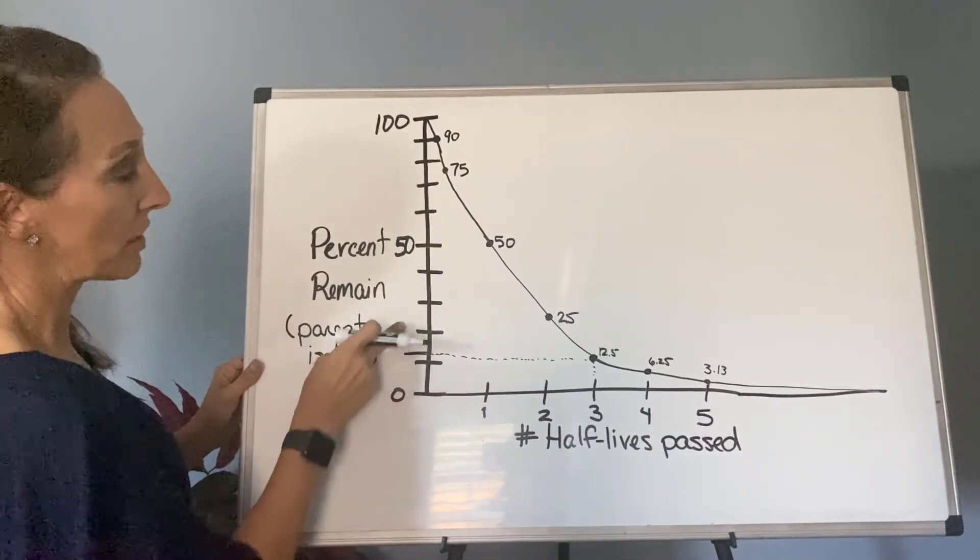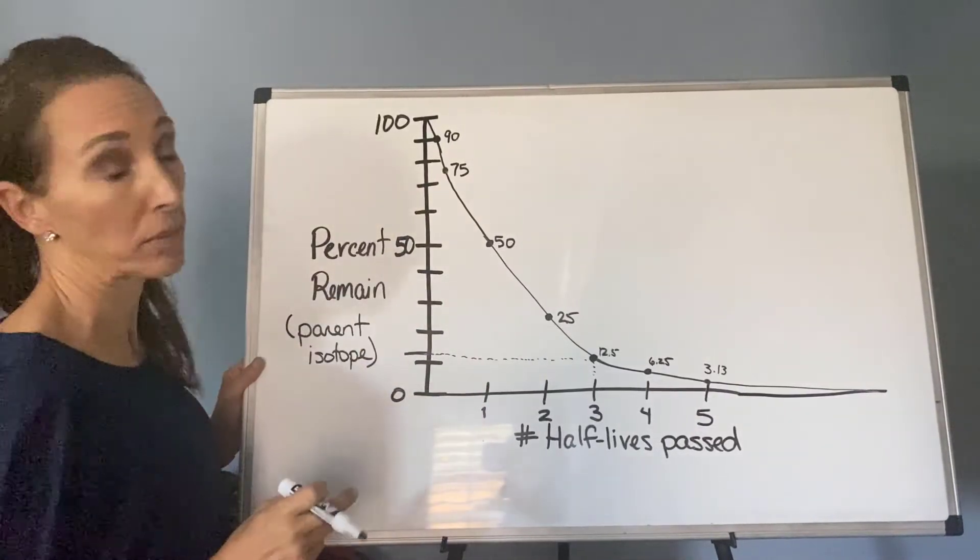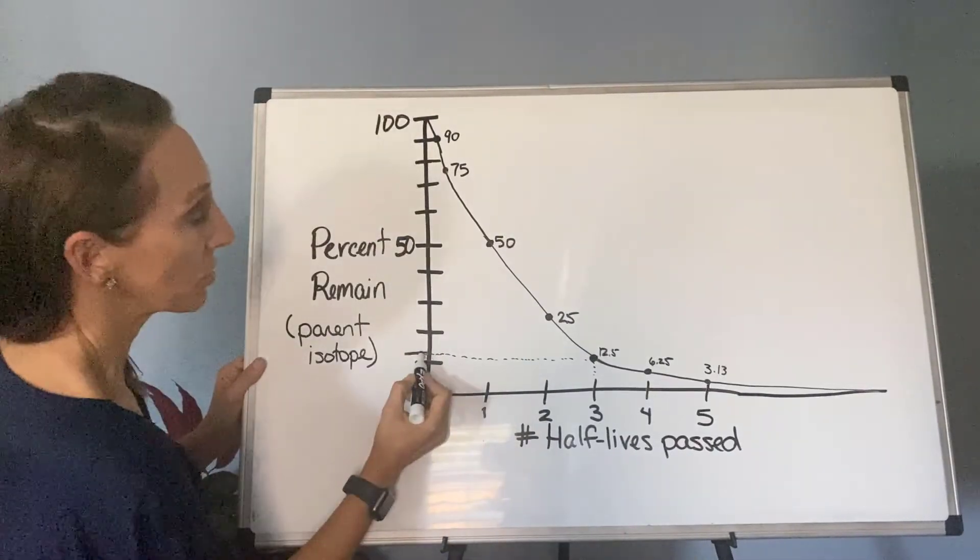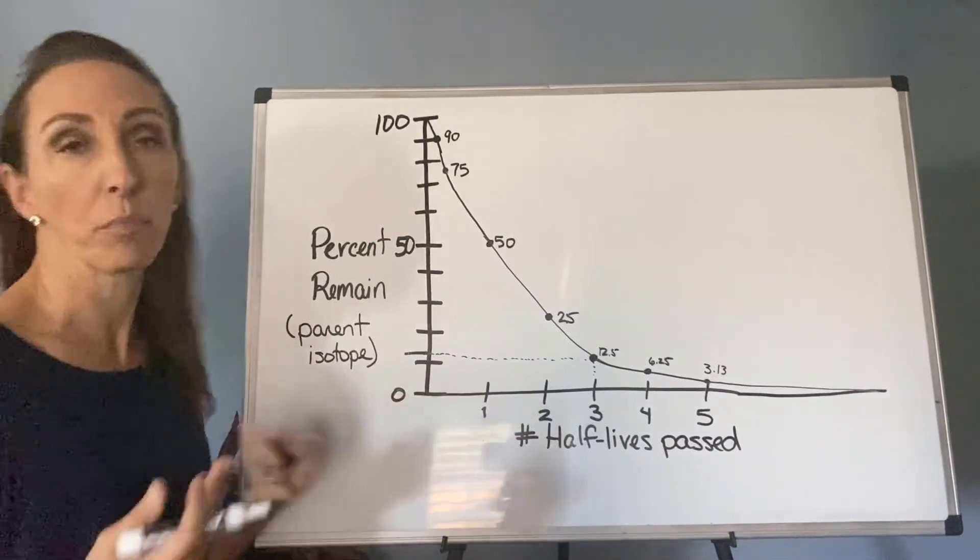And so in my chart, each of these lines on the y-axis represents 10 - so 10, 20, 30, 40, 50. You'll see that this comes across right around 12.5%.